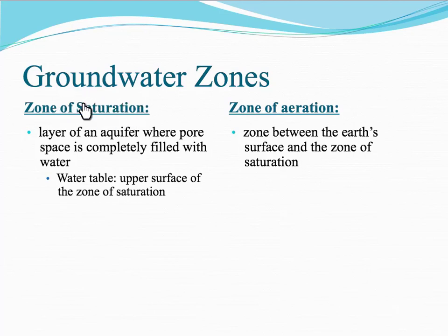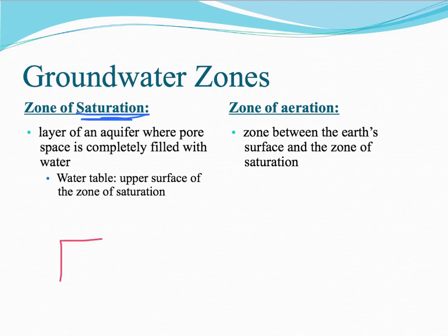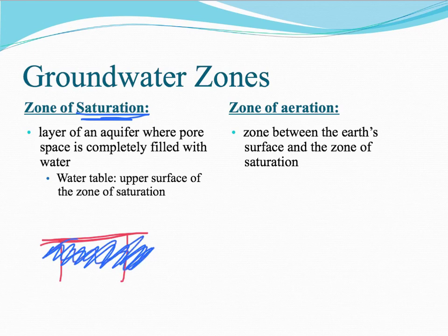The zone of saturation — if you're saturated with water, that means it has a lot of water in it. So the zone of saturation is the layer of an aquifer that is filled up with water. The top of the zone of saturation is called the water table. Think about it like this: here's a table, and here's water underneath the table — water table. The water holds up the table, and then this would be your zone of saturation.